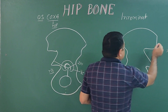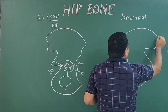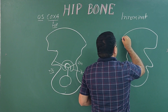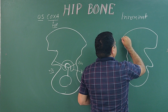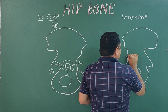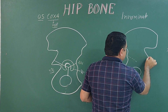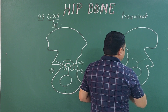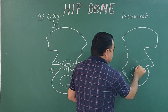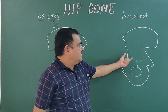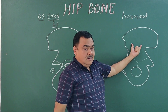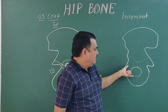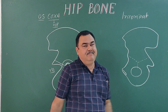Here you can see the junction of the three bones — the ilium, pubis, and ischium — forming the acetabulum.